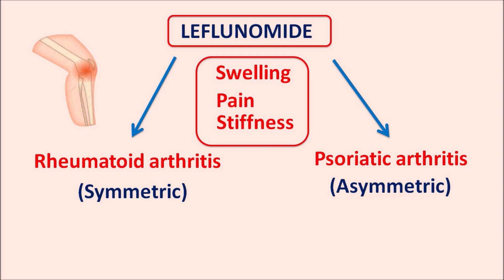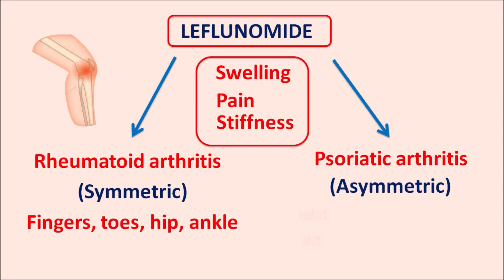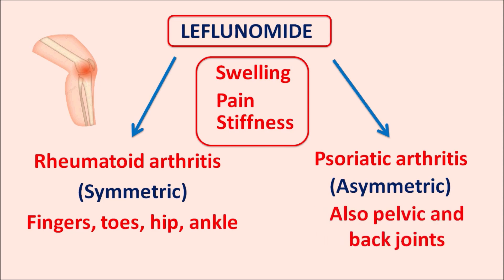The type of joints affected also differs between the two conditions. In rheumatoid arthritis, mainly the fingers, toes, hip, and ankle are affected. In psoriatic arthritis, in addition to fingers, toes, hip, and ankle, the pelvic and back joints are also affected.